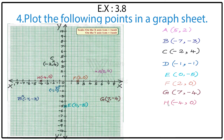Point H: (-4, 0). Minus 4 is the X coordinate — the left side is negative, so go to minus 4 on the X axis. The Y coordinate is 0, so there is no vertical movement. The point H lies on the X axis at (-4, 0).